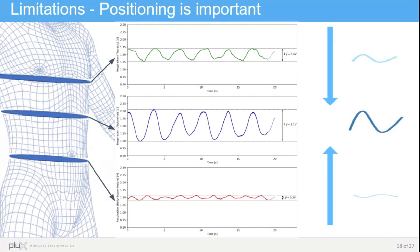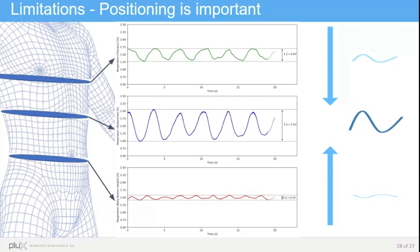But this doesn't mean that the signal quality gets better if we place the sensor much lower, because if we place the sensor in a much lower region in the abdominal position, then the peak-to-peak amplitude almost vanishes, and we cannot distinguish any breathing pattern anymore.